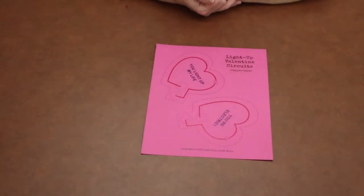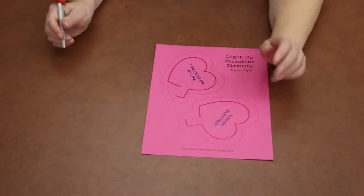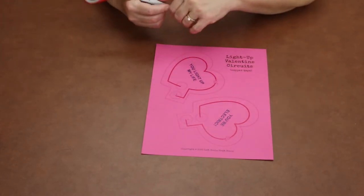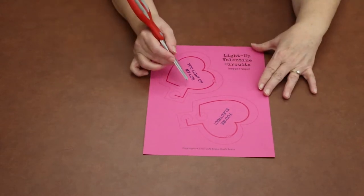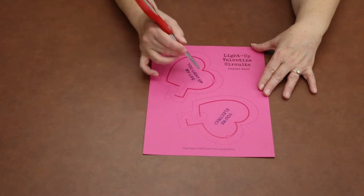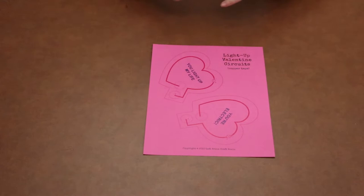The first step for our project today is going to be cutting out one of these templates, and you can choose whichever one you like. The other thing you could do if you want to make a change to it is you could cut out a separate heart and glue it on the inside to cover up these words. Whatever you think will be fun for you.